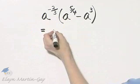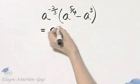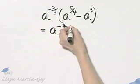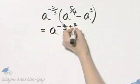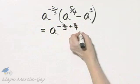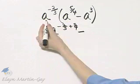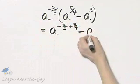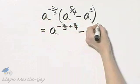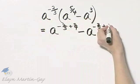So this times this will be a raised to the power of that first exponent, negative two-thirds, plus the second exponent, five fourths. And then minus a raised to the power of — I'm multiplying this times this — so it's a raised to the power of negative two-thirds plus three.